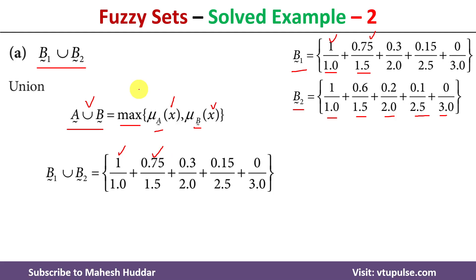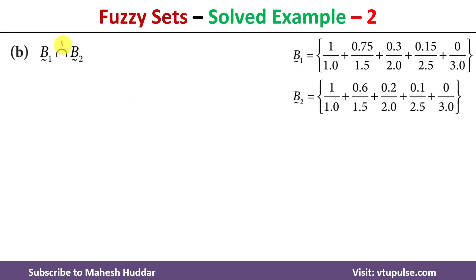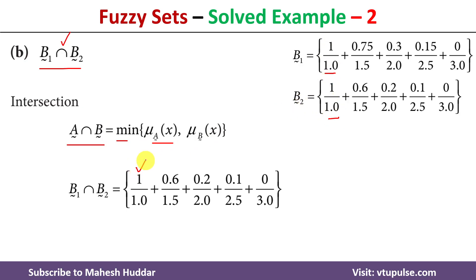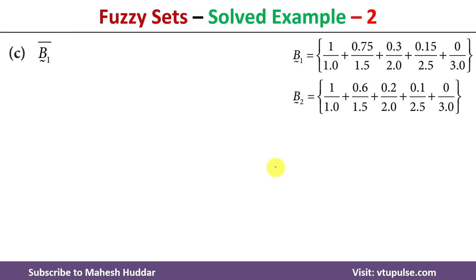The second operation is intersection, denoted by B1 ∩ B2. The intersection of two fuzzy sets A and B is always equal to the minimum of the degree of membership for an element across the two sets. For element 1, the degree of membership is 1 in both sets, so the intersection also gives 1. For element 1.5, the degree of membership is 0.75 in B1 and 0.6 in B2; the minimum is 0.6, so 0.6 will be part of the intersection. We calculate similarly for all remaining elements.